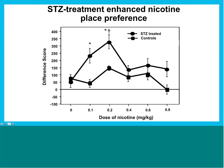On this graph the Y-axis shows CPP scores — the difference between time spent in the compartment before versus after nicotine conditioning — measured in a drug-free state. The X-axis shows different conditioning doses of nicotine. What we see is that animals treated with streptozotocin — the diabetic animals — developed a much stronger place preference for nicotine compared to non-diabetic animals.